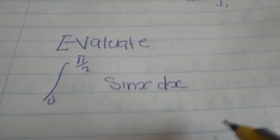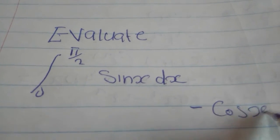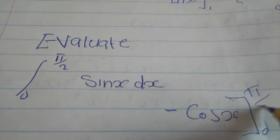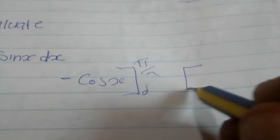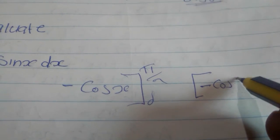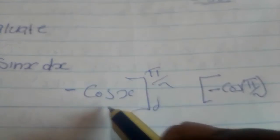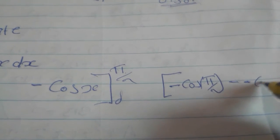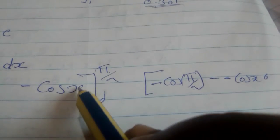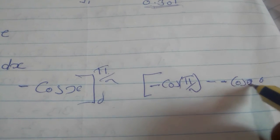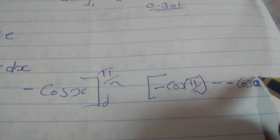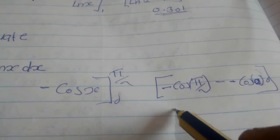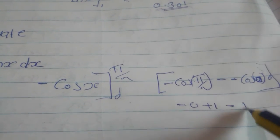So you get negative cos(x) evaluated from 0 to π/2. Substituting the upper bound: negative cos(π/2), then minus substituting the lower bound: negative cos(0). This gives you negative 0 plus 1, which equals 1.